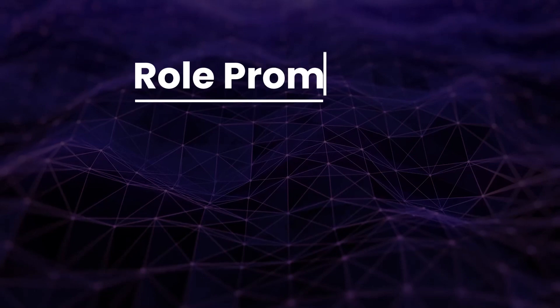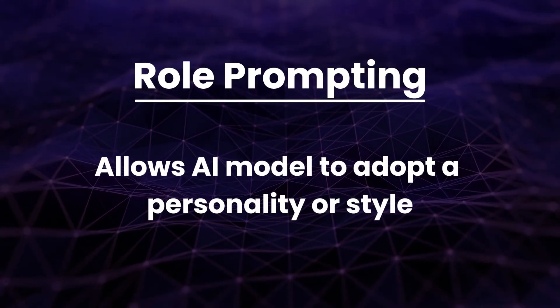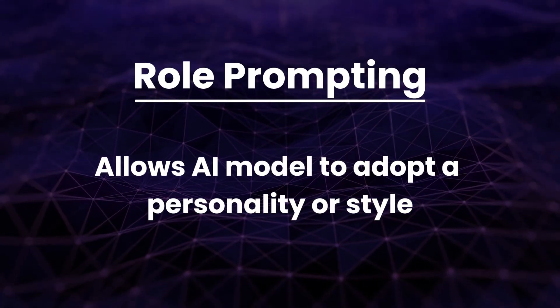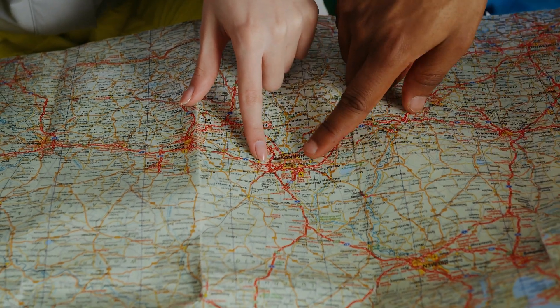You can think of system prompting as the overall goal or fundamental capabilities of the AI model. Contextual prompting, on the other hand, is more specific to the task or input that you're feeding to the AI model. Role prompting allows the AI model to adopt a specific personality or style — for example, you can say 'act like a friendly travel guide' or 'explain this like a teacher.' This allows the AI to provide an output in a way that matches your role.